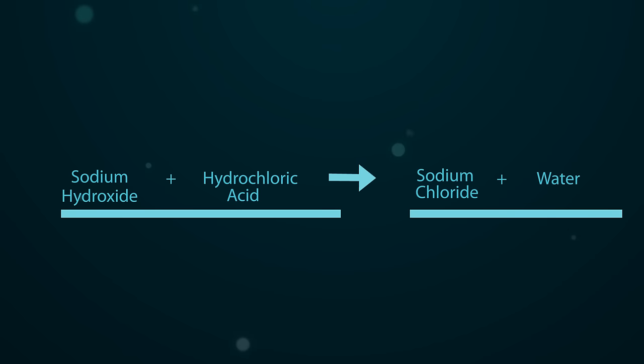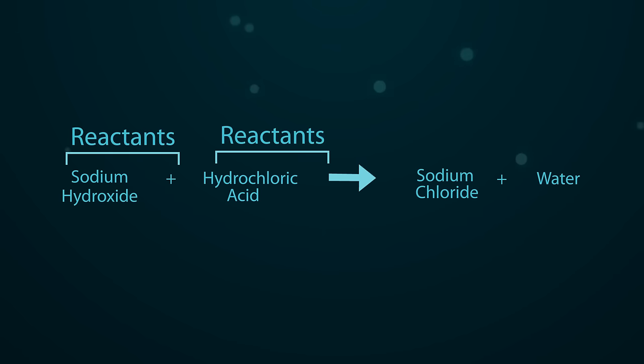The plus sign indicates that there is more than one reactant or product on each side of the equation. And you'll note that the reactants are on the left and the products are on the right.